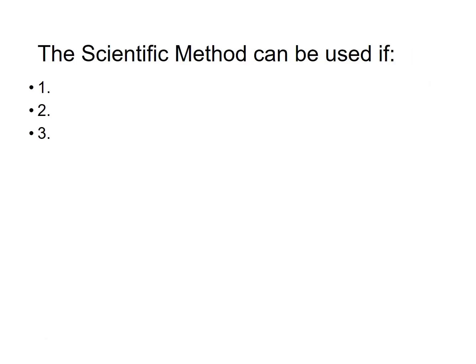There are three criteria that must be met if that phenomenon is going to be studyable using the scientific method. The first criterion is does the phenomenon repeat? It must repeat or occur again in the future if you're going to use the scientific method.